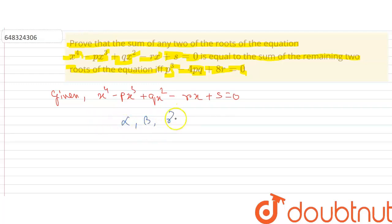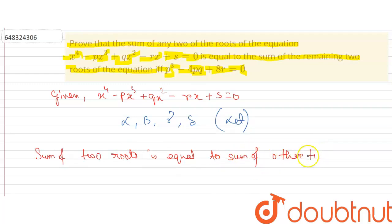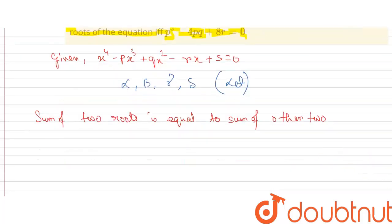We can take alpha, beta, gamma, delta as the four roots of this bi-quadratic equation. Here it is given that the sum of two roots is equal to the sum of the other two. Therefore, we can write the relation as alpha plus delta equals beta plus gamma.